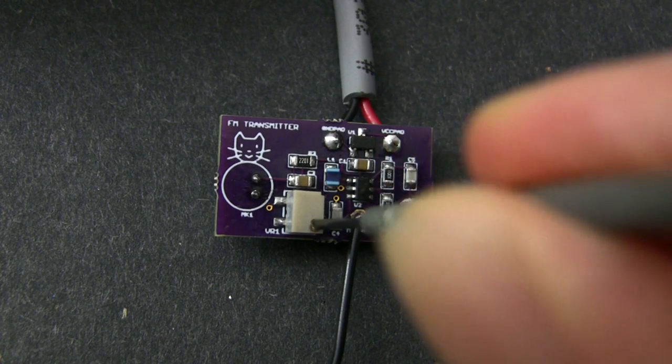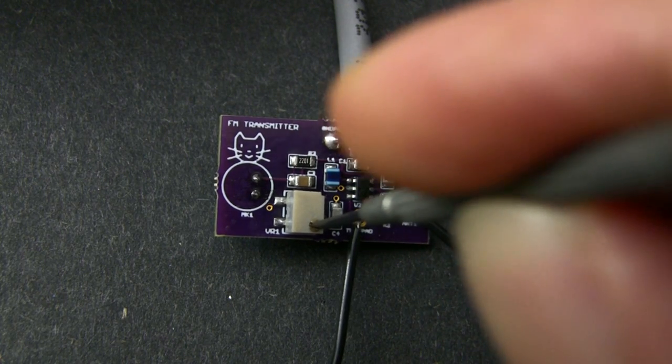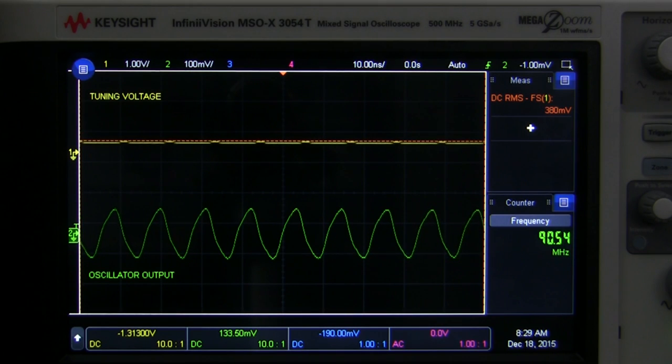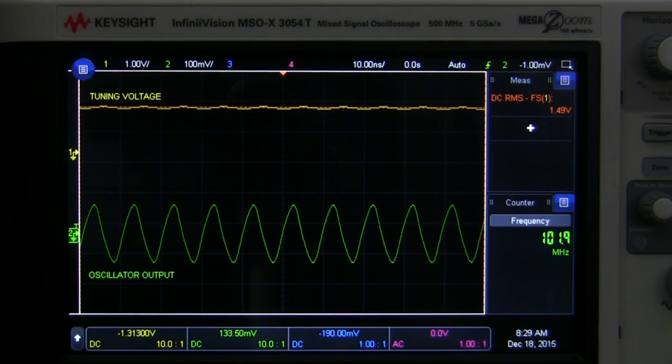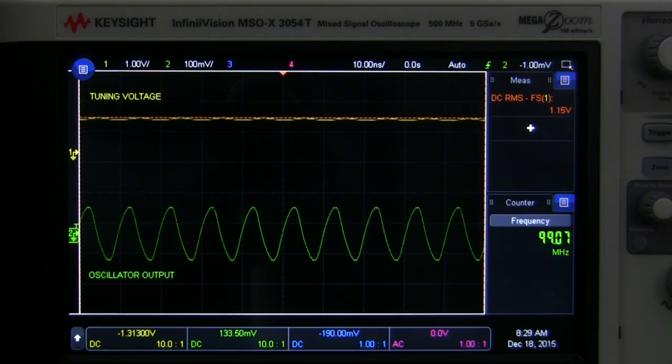Now if you adjust the potentiometer, you change the voltage at the tuning pin, which controls the oscillation frequency. And we can choose pretty much any frequency in the consumer FM radio band.